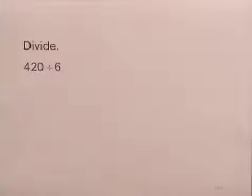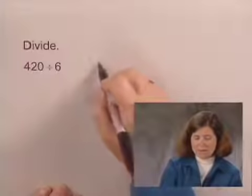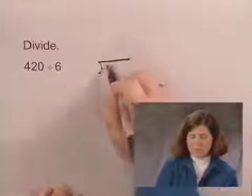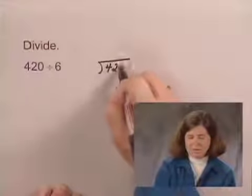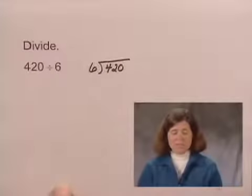In this question, we will divide 420 by 6. We write 420 divided by 6 in the form with a division sign, with 420, the dividend, under the division sign, and 6, the divisor, outside the division sign.